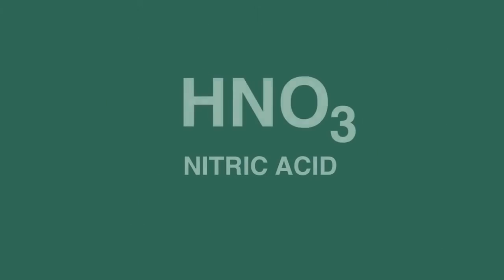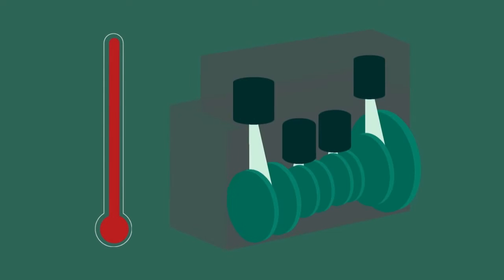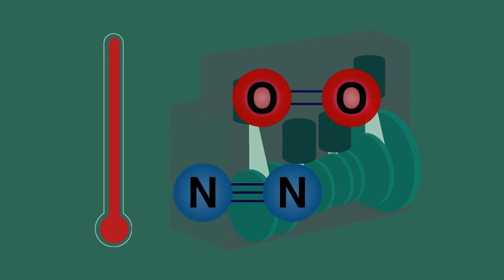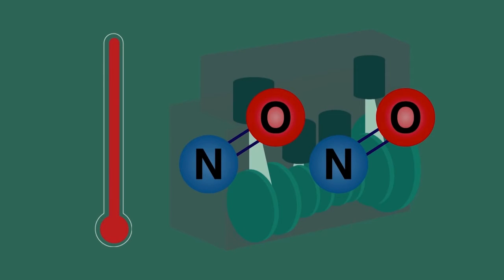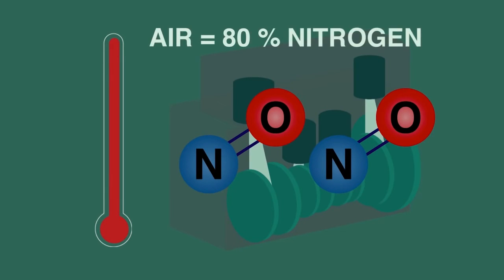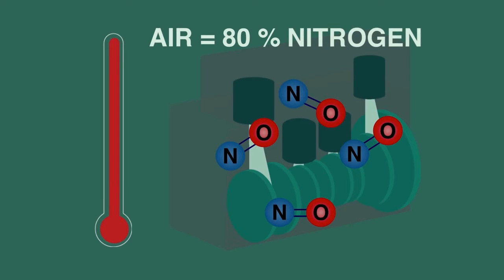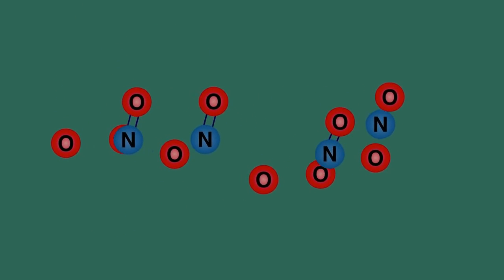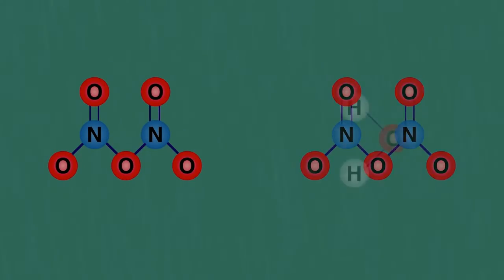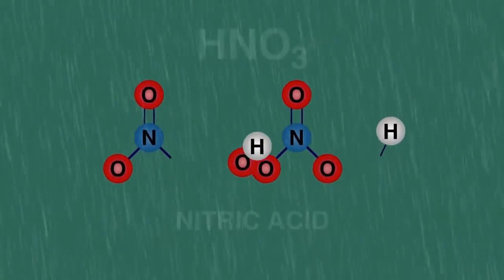Let's now consider how nitric acid gets into the rain. In the high temperature conditions in the cylinders of our motor vehicles, a small amount of nitrogen and oxygen from the air can react. Remember that air taken in to combust the fuel is nearly 80 percent nitrogen. So exhaust gases from vehicles contain small but significant amounts of nitrogen oxides. Once the oxides of nitrogen are in the air, they react with more oxygen, just like we saw with sulfur dioxide, and dissolve in the rainwater to form nitric acid.